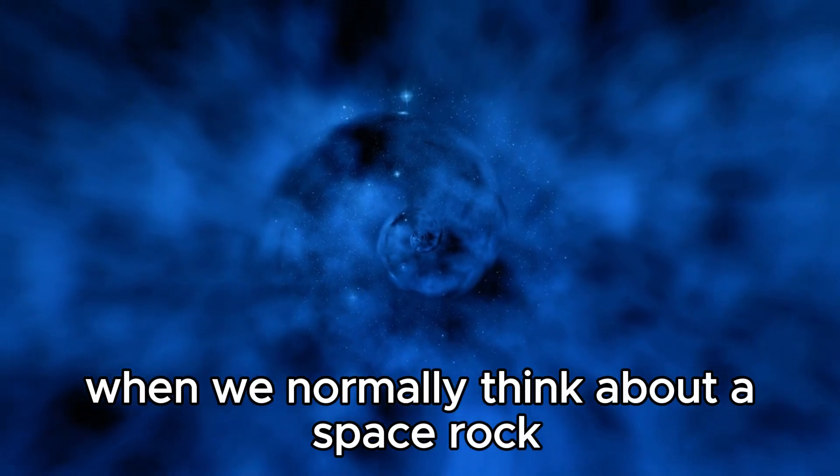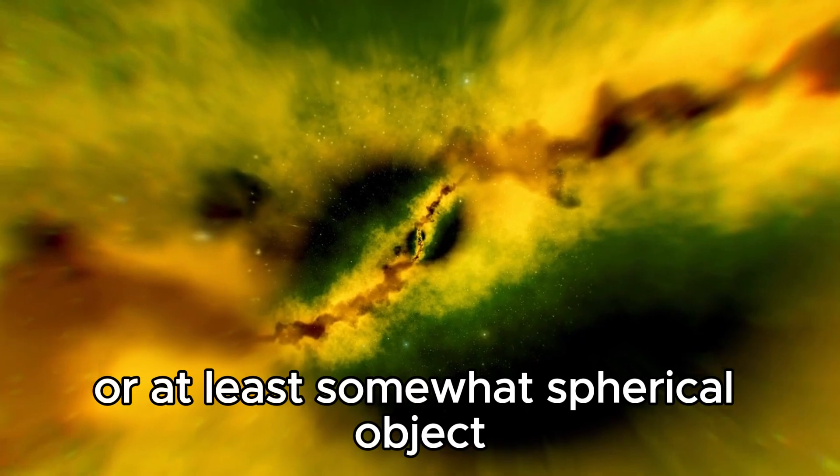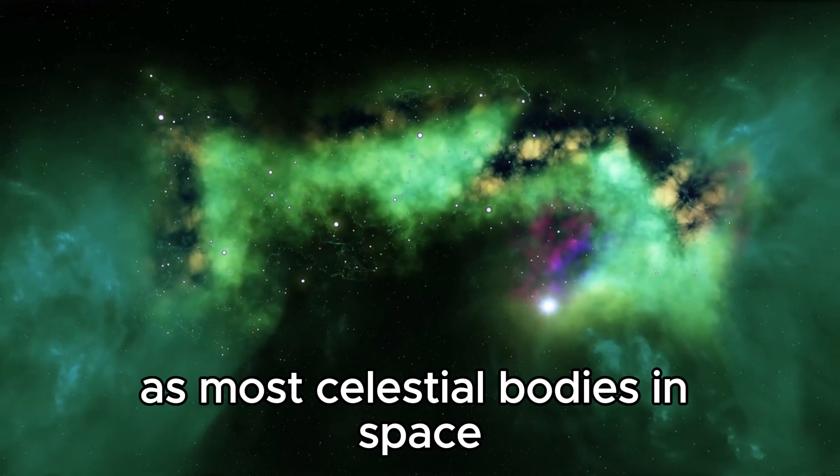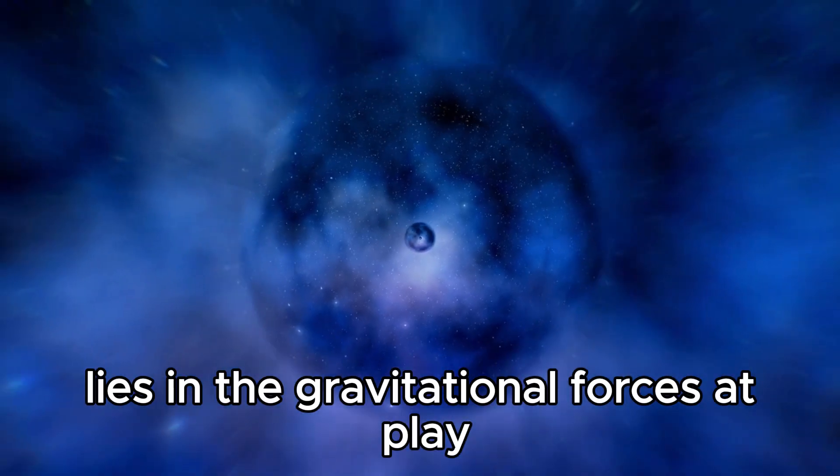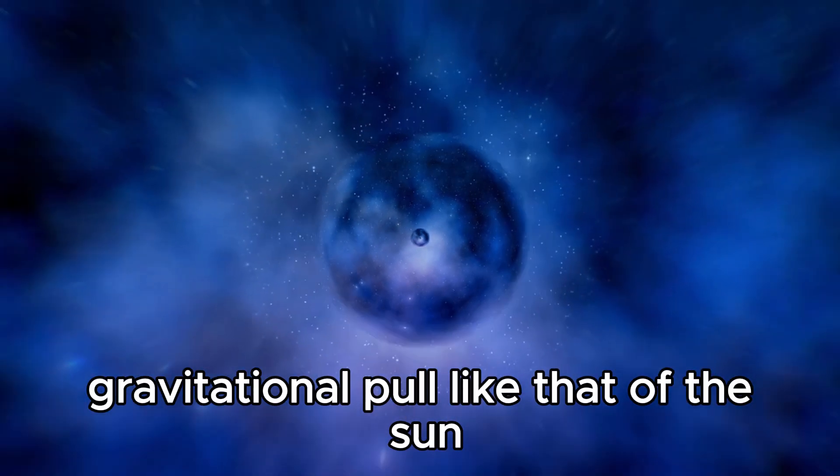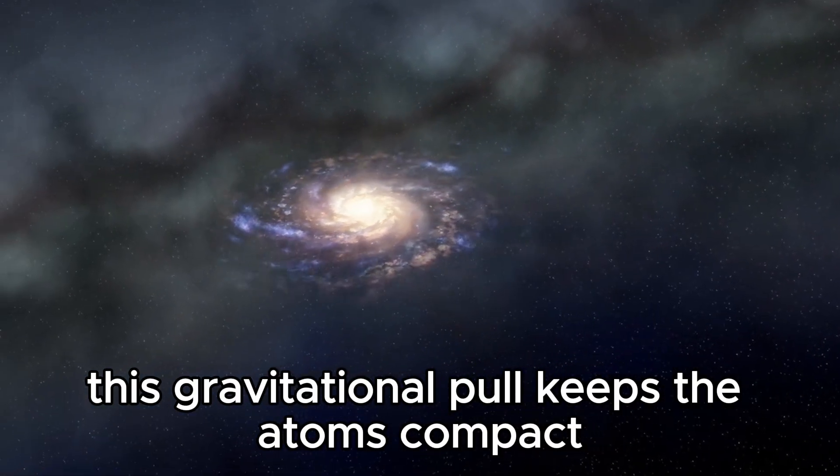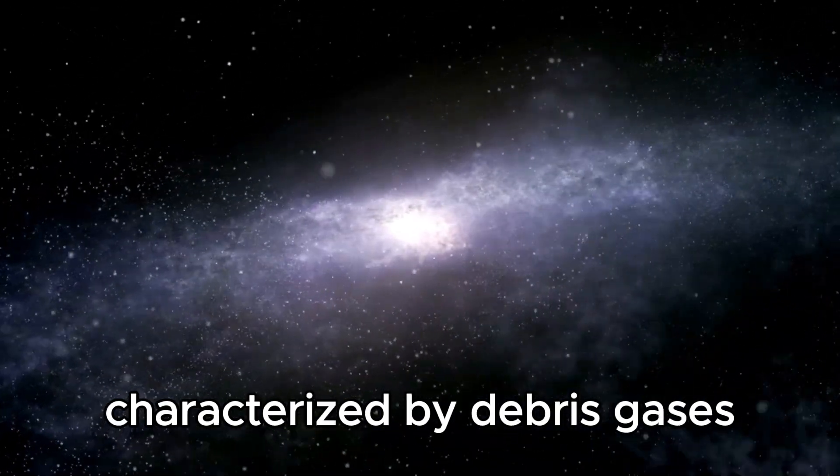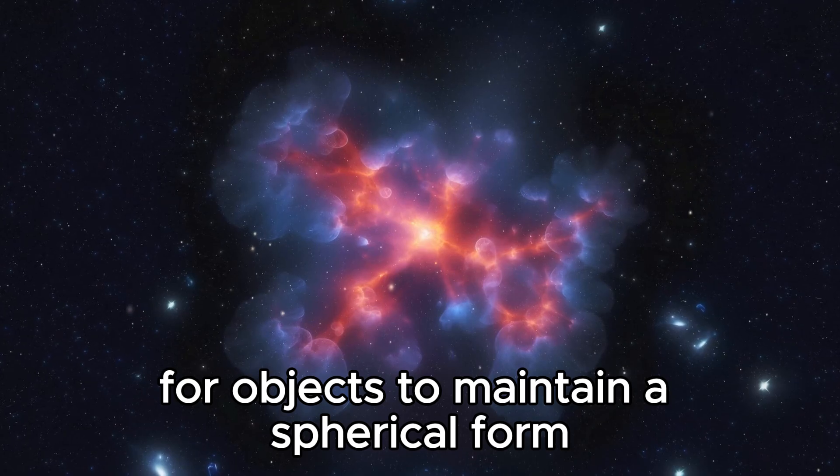When we normally think about a space rock, whether it's an asteroid or a comet, our mind typically creates an image of a round or at least somewhat spherical object. This expectation isn't really that far off, as most celestial bodies in space tend to adopt spherical shapes. The reason behind this lies in the gravitational forces at play. Within an object, the atoms are typically attracted to a single gravitational pull, like that of the sun or most other massive celestial bodies. This gravitational pull keeps the atoms compact and spherical. But that's not all. The harsh conditions of open space, characterized by debris, gases, and pressure, further reinforce the tendency for objects to maintain a spherical form.